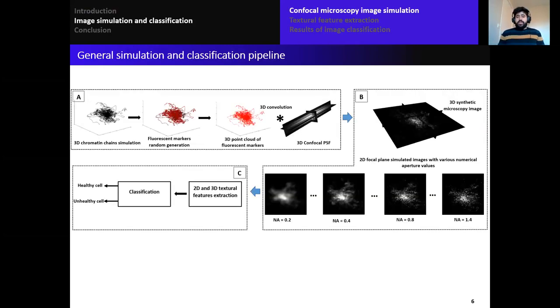We propose here the general pipeline of our study. This general pipeline is divided into three main blocks. The first one is to simulate the objects, which are the DNA fluorescent markers, and to model the confocal PSF. Block B is to simulate the 3D image and the 2D image, and finally, block C is to extract features and do the classification. Let's talk in details about each one of these blocks.